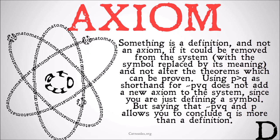Something is a definition and not an axiom if it could be removed from the system — with the symbol replaced by its meaning — without altering the theorems which can be proven. For example, using 'p implies q' as shorthand for 'not p or q' does not actually add a new axiom, since we're just defining the symbol of implication. But saying that 'not p or q and q' allows you to conclude q is more than a definition, because you couldn't remove any defined symbol there and leave the system intact.